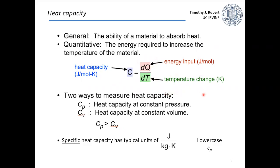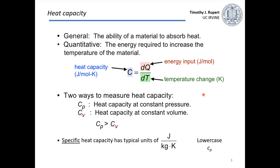One important thing to point out is that there are a few different ways to measure heat capacity. You can either keep the system under constant pressure or constant volume, and under those different conditions you'll measure different values. Generally, you'll measure a higher heat capacity under constant pressure than constant volume. You'll also see measurements of specific heat capacity — same principle, but describing joules needed to heat a kilogram of material one Kelvin rather than a mole. The difference in notation is you'll see lowercase c.